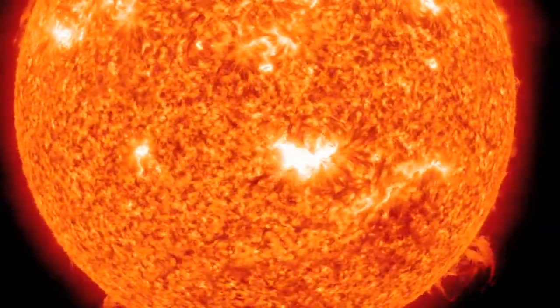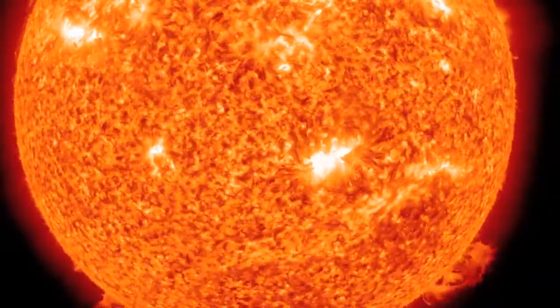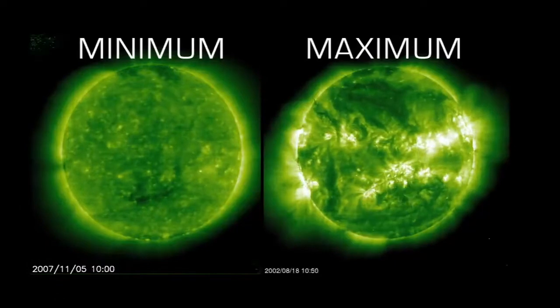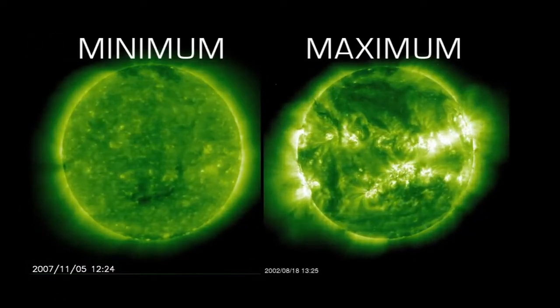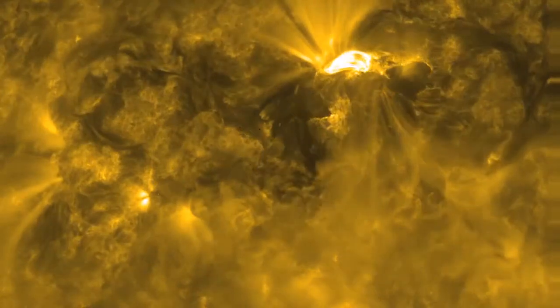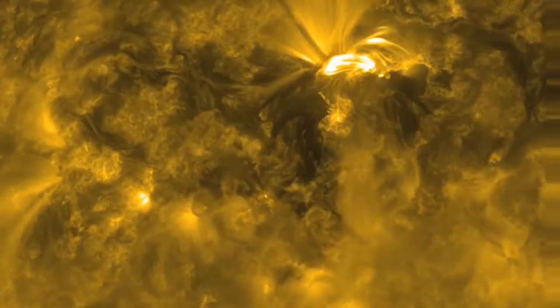Solar flares may seem like faraway events, but they can damage satellites and even ground-based technologies and power grids. Every 11 years, as the sun reaches its maximum activity, they become bigger and more common, and that increases the chances that one will significantly affect Earth.